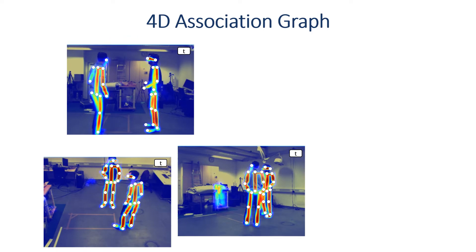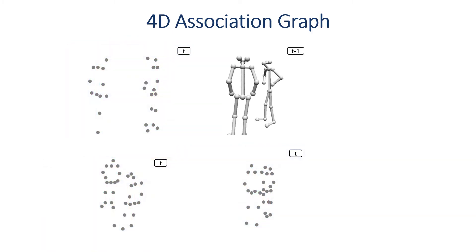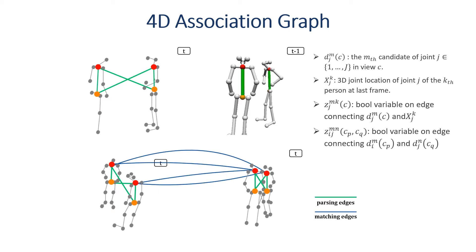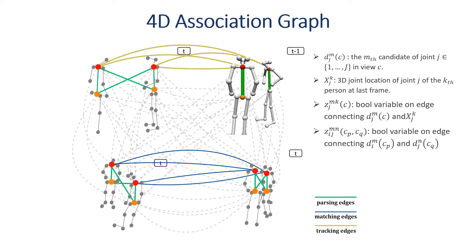As shown in figure, by regarding body parts and 3D joints in the former frame as graph nodes, we construct three kinds of edges with significant semantic meaning between nodes: per-view parsing edges, cross-view matching edges, and temporal tracking edges.